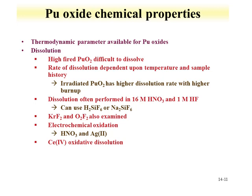An overview of the chemical properties of plutonium oxides is provided, with thermodynamic data available in the Chemical Thermodynamics of Plutonium. For the nuclear fuel cycle, an important consideration is dissolution. Any high-fired plutonium dioxide is difficult to dissolve, which has implications for MOX fuel — after multiple burn and recycle cycles, dissolution becomes difficult. Dissolution of plutonium dioxide depends on temperature and sample history. Irradiated dioxide has a higher dissolution rate with higher burnup. Dissolution can be performed with addition of HF, other strong oxidizing agents, electrochemical oxidation, or with the use of cerium.